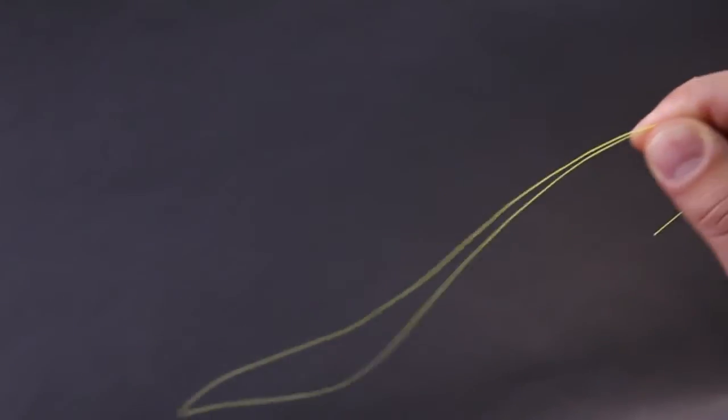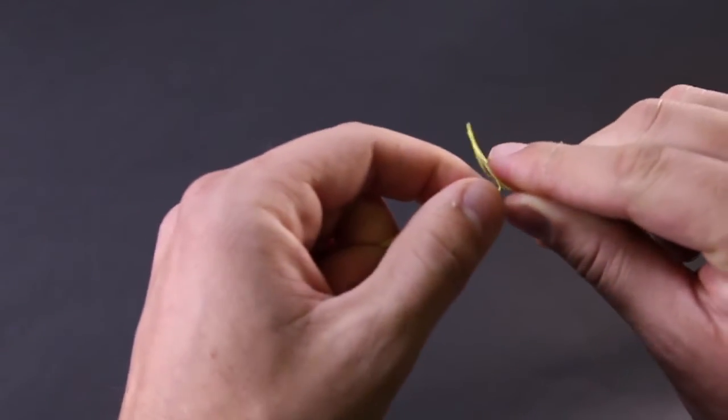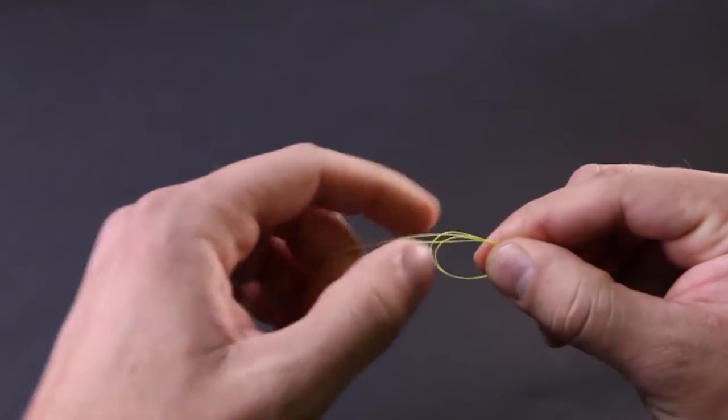First thing you need to do is double your line to about one to two feet. From there you create a small loop and you want to hold that loop between your pointer finger and your thumb.